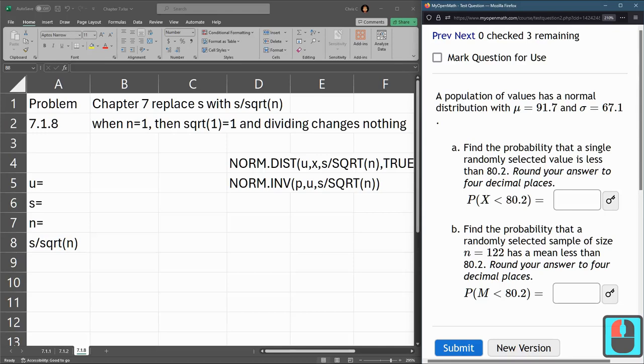But part a, there's no n. But it is spelled out a single randomly selected value. So that means n is 1.